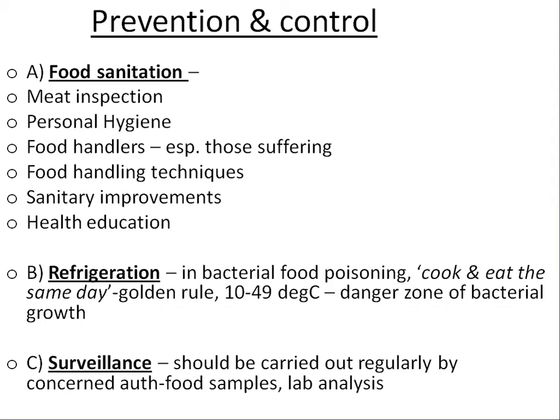Refrigeration is very important because we don't consume all cooked food immediately. To prevent bacterial food poisoning, refrigerate the food — keeping it at lower temperatures prevents contamination. We must follow the cook-and-eat same-day golden rule. Ten to 49 degrees centigrade is a danger zone for bacterial growth — we must keep food below 10 degrees. Surveillance should be carried out regularly by authorized authorities, and food samples need to be taken for lab analysis.